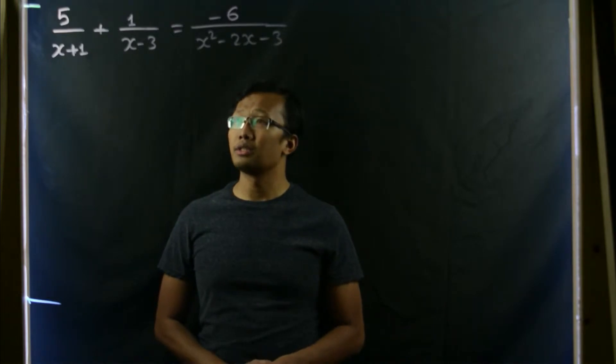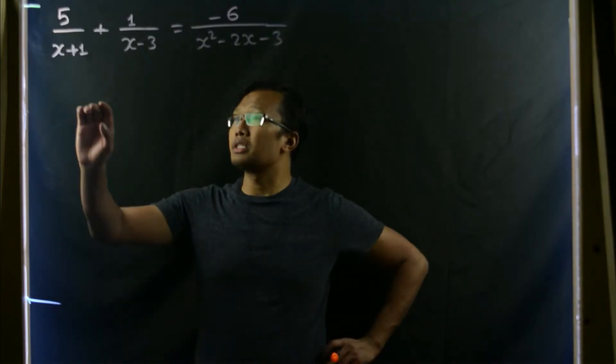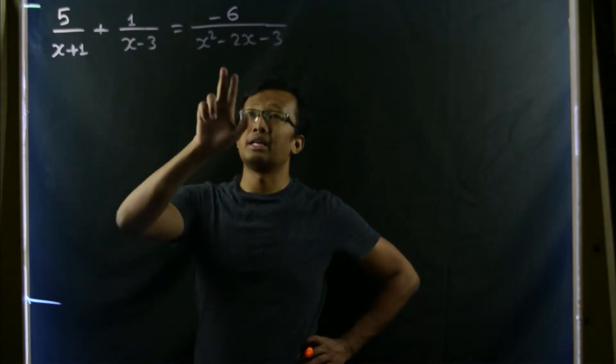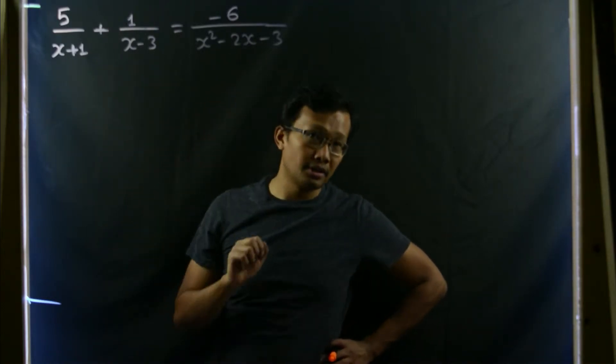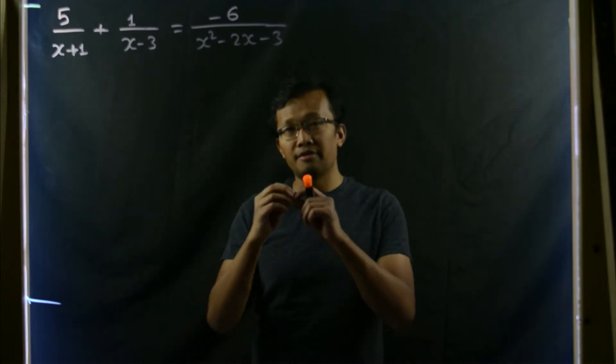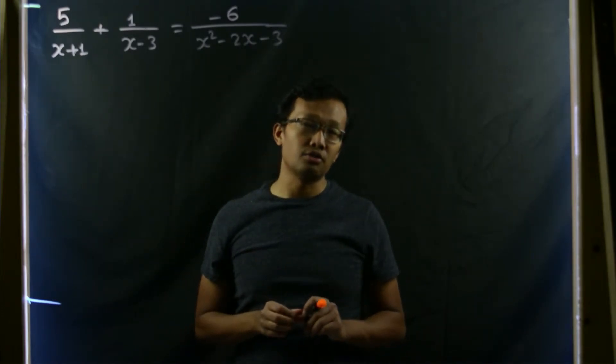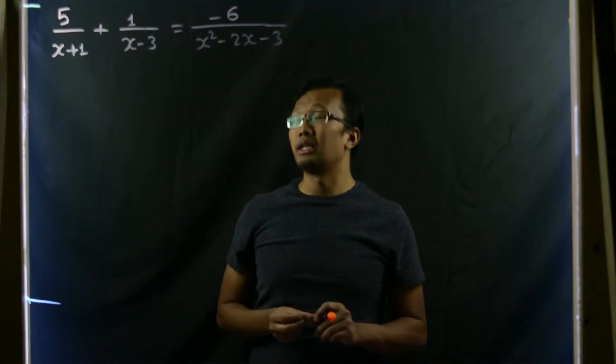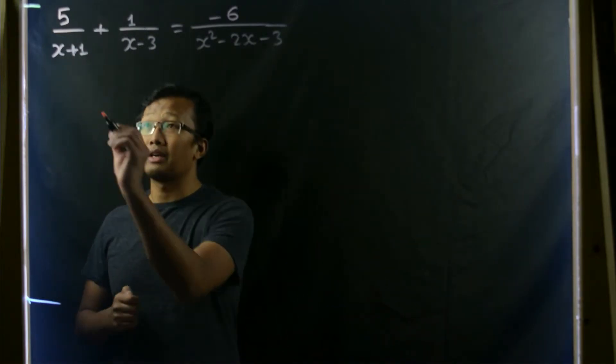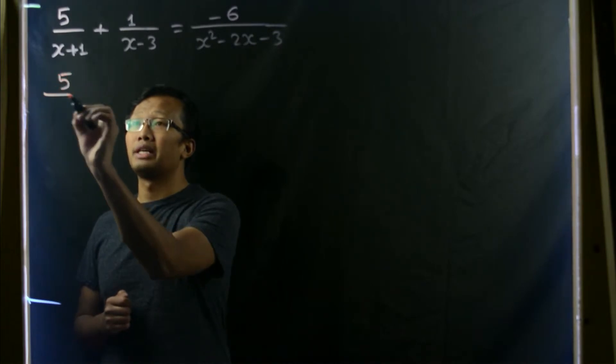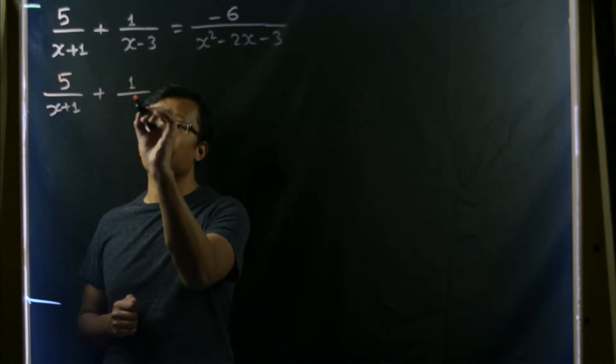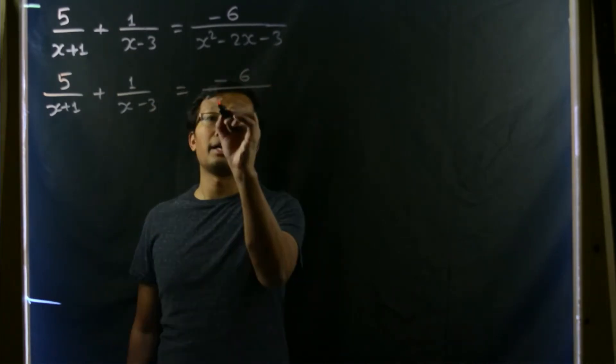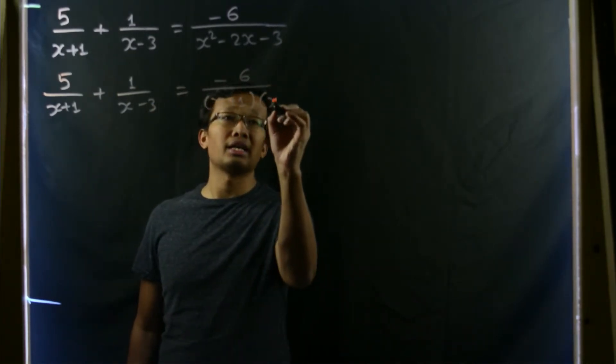Let us solve this rational equation. Here you can see in the denominator we have x+1, x-3, and x² - 2x - 3. But we should be able to factorize this quadratic expression into 2 linear factors. So I can write this as simply 5/(x+1) plus 1/(x-3) equals -6 divided by (x+1)(x-3).